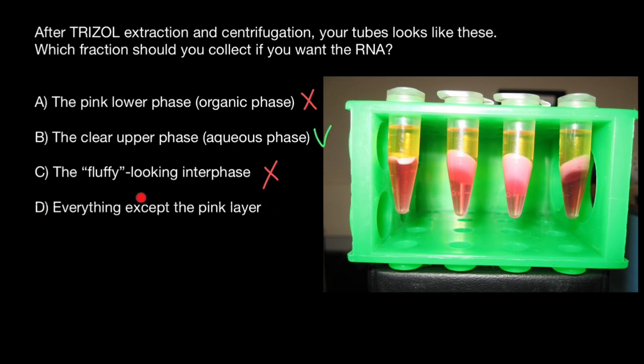And of course, variant D, everything except the pink layer, meaning the clear phase and interphase contain both RNA and DNA. This is also the wrong answer. We're only interested in the phase which contains only RNA.